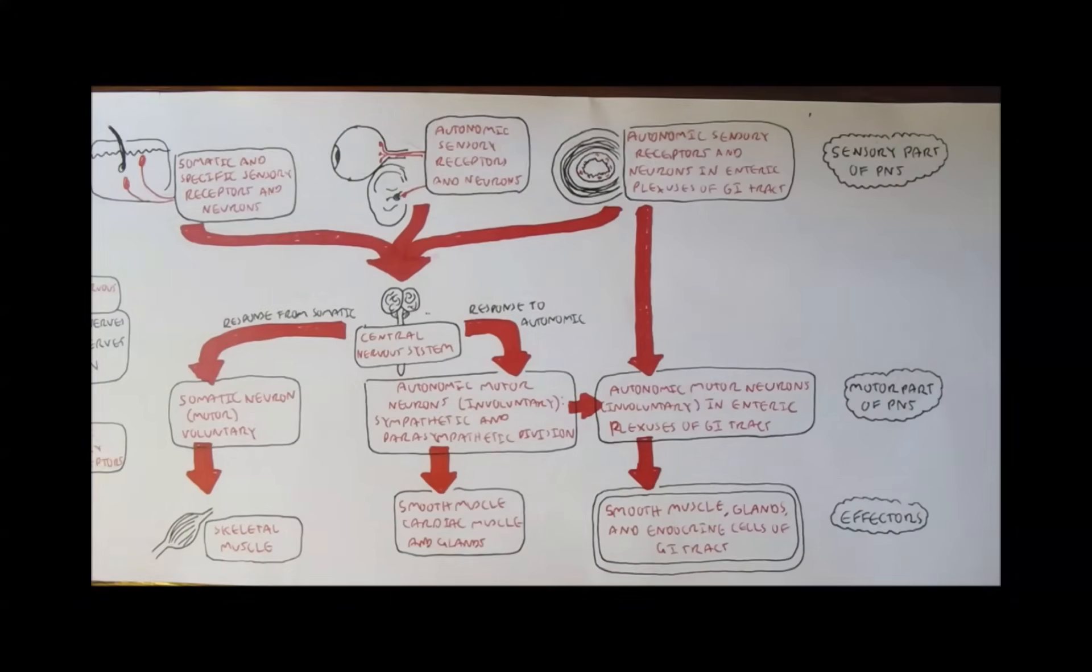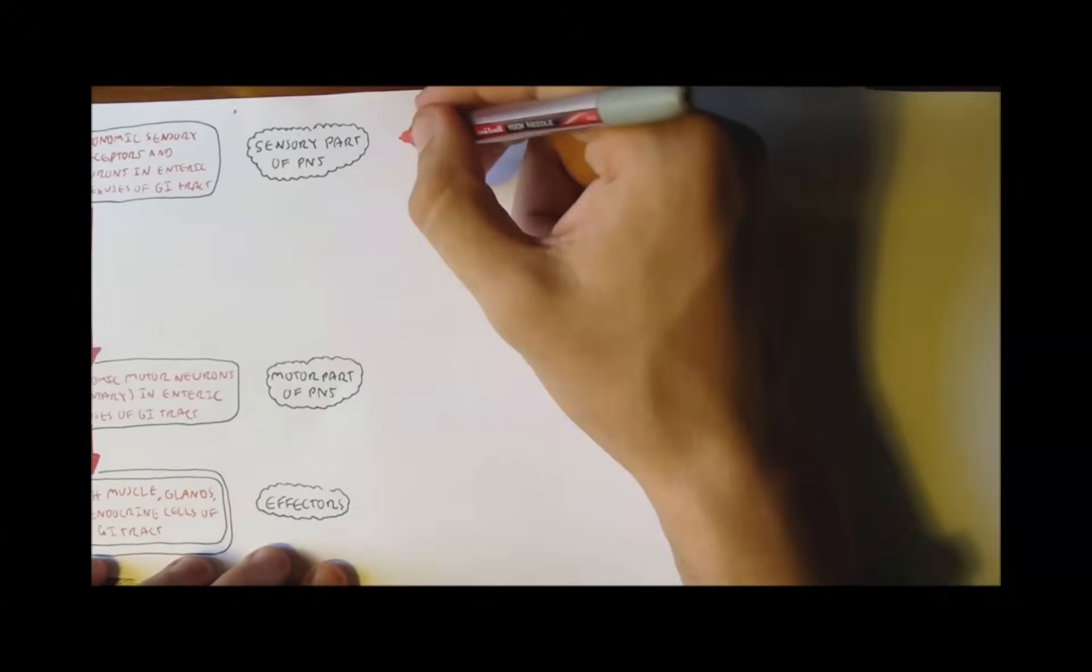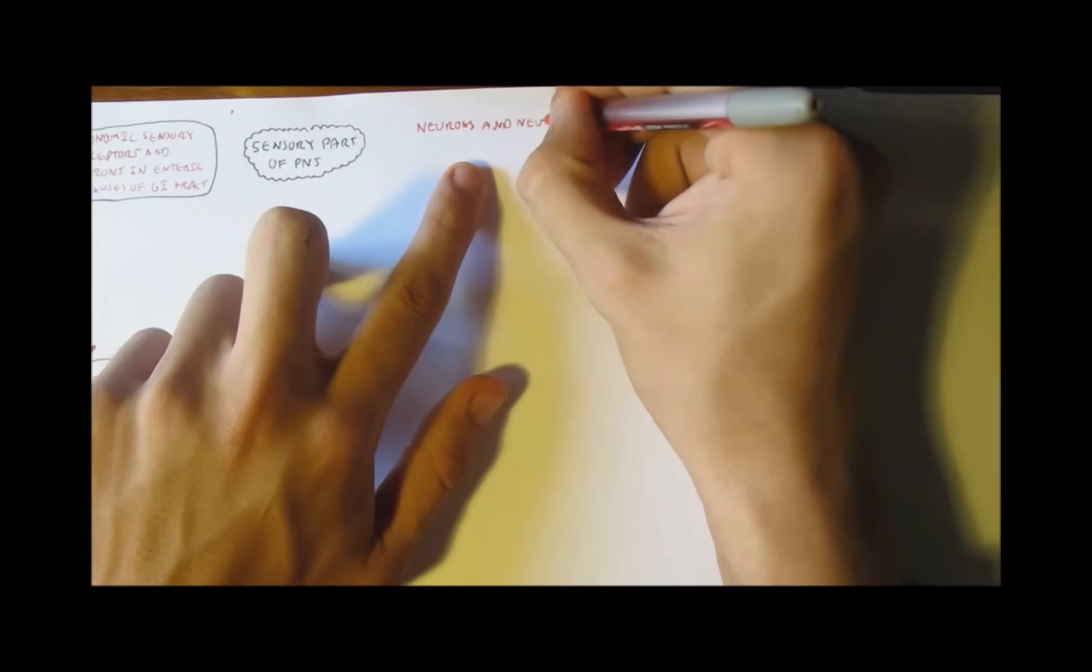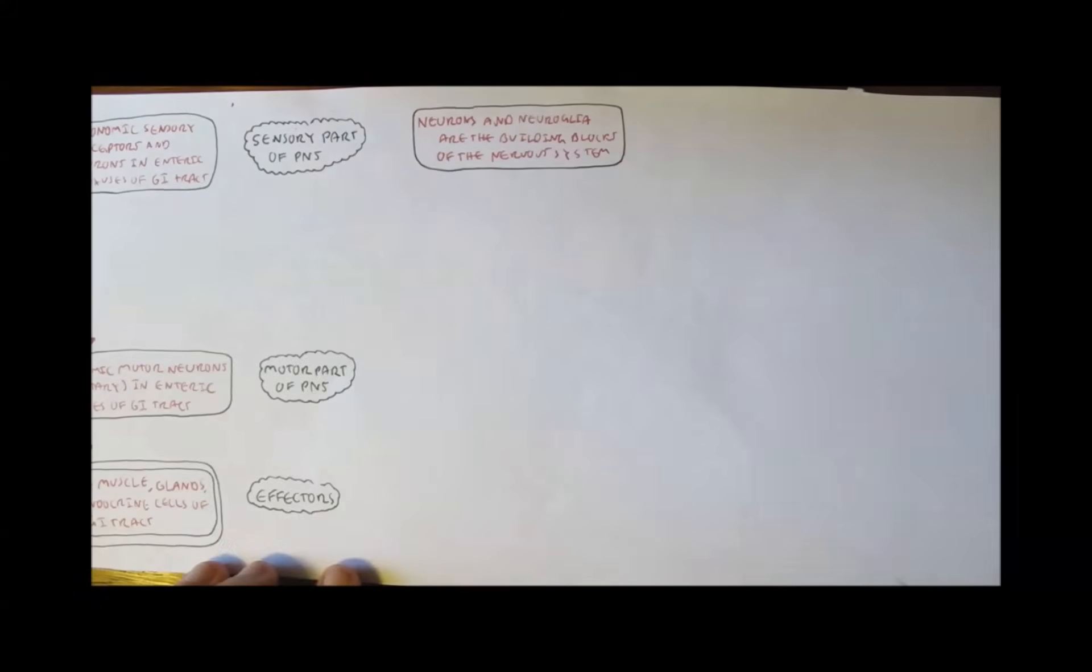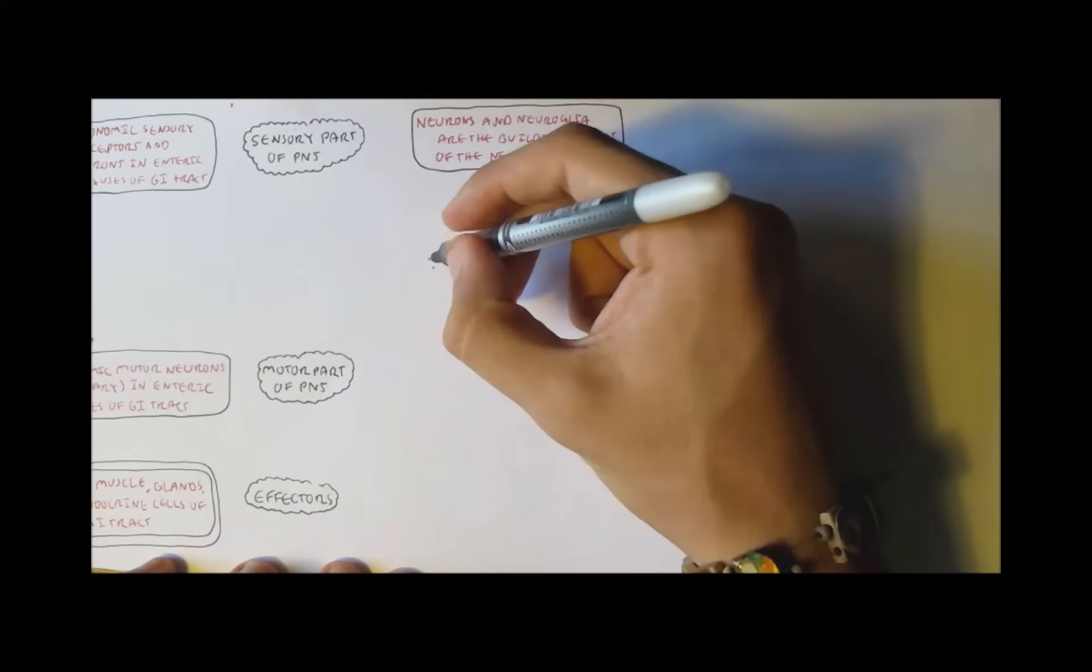That might have been very poorly introduced. I hope you got it. Anyhow, the cells of the nervous system are basically the neurons and the neuroglial cells. I would like to concentrate on a neuron first, because it's the most important.